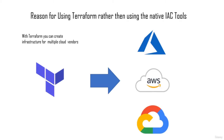Cloud vendors provide native infrastructure-as-code tools: Azure has Azure Resource Manager with JSON templates, AWS has CloudFormation, and GCP has its own equivalent — most written in JSON or YAML. What makes Terraform special is that if you learn it, you can create infrastructure across any of these platforms without relearning anything. You just change the provider name and the resource configuration, and those two changes let you create infrastructure in any cloud vendor using one language.